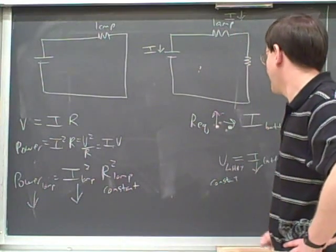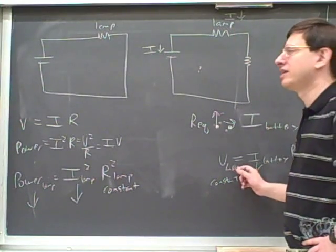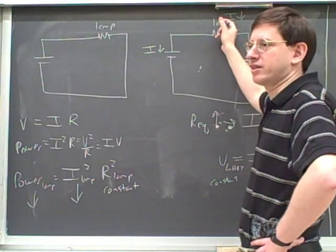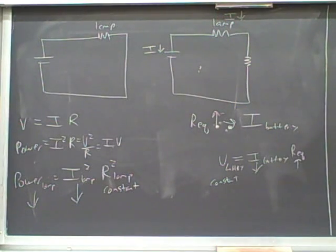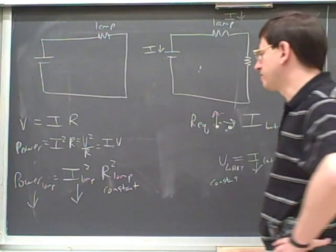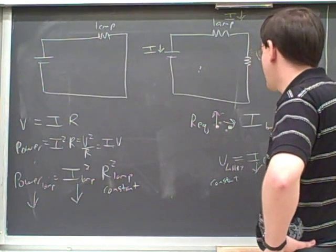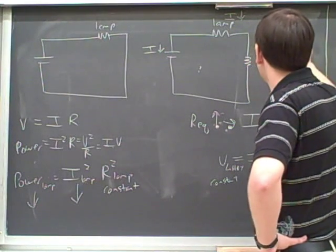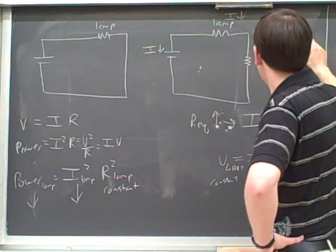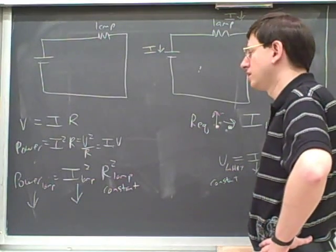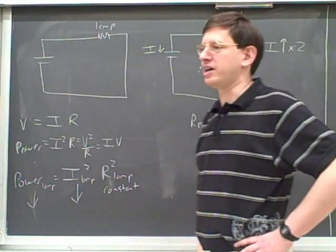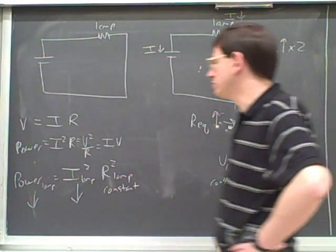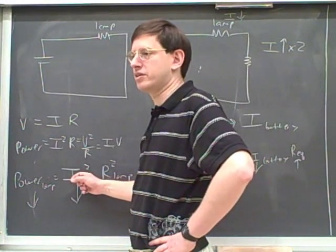Before we could work out the lamp, we had to figure out what was happening to the battery. The current from the battery is the same as the current across the lamp. So let's be a little more specific: if the current has gone up by a factor of two, how much will the power increase by? By four — not two, but two squared, because the current is squared in the power equation.